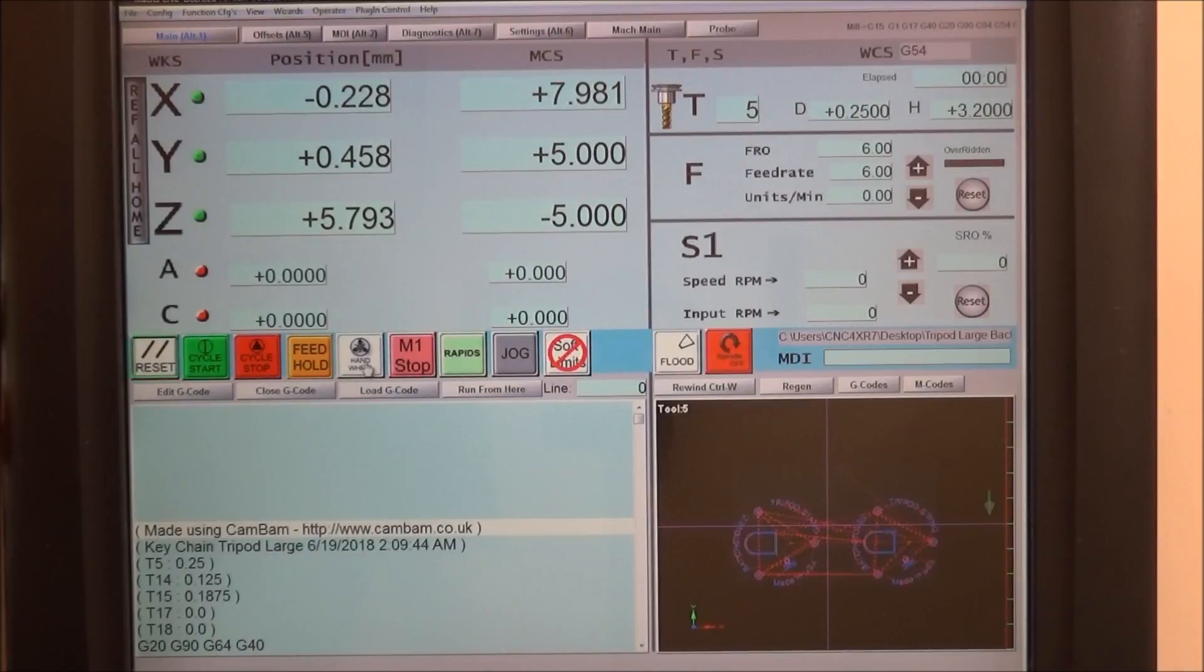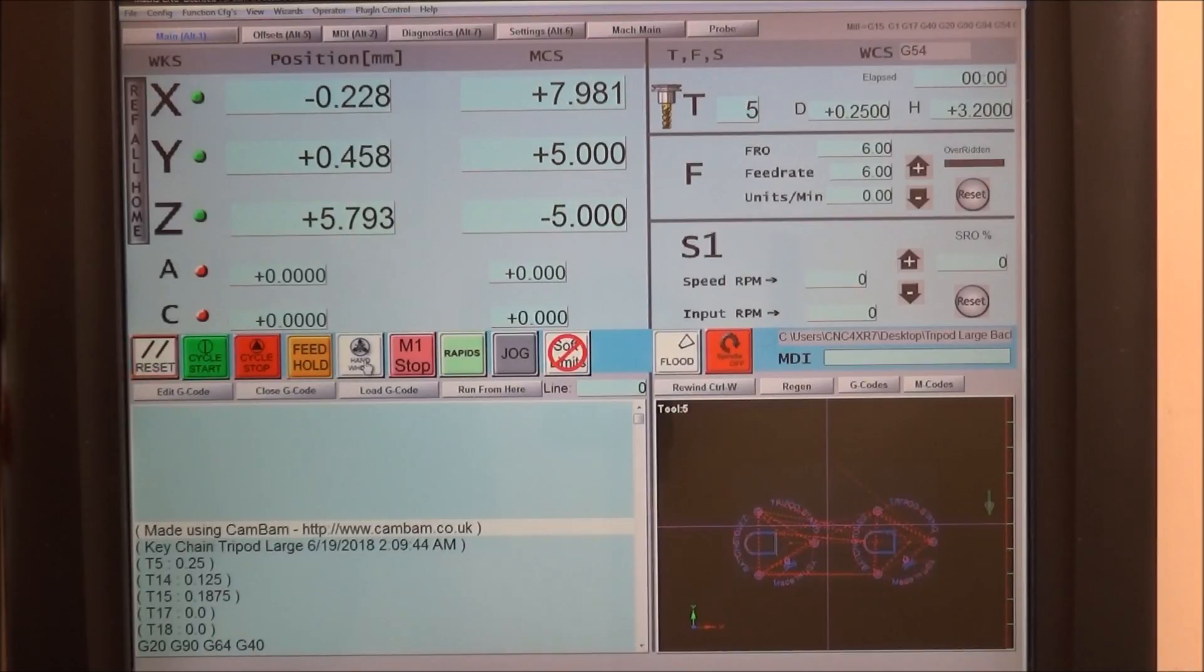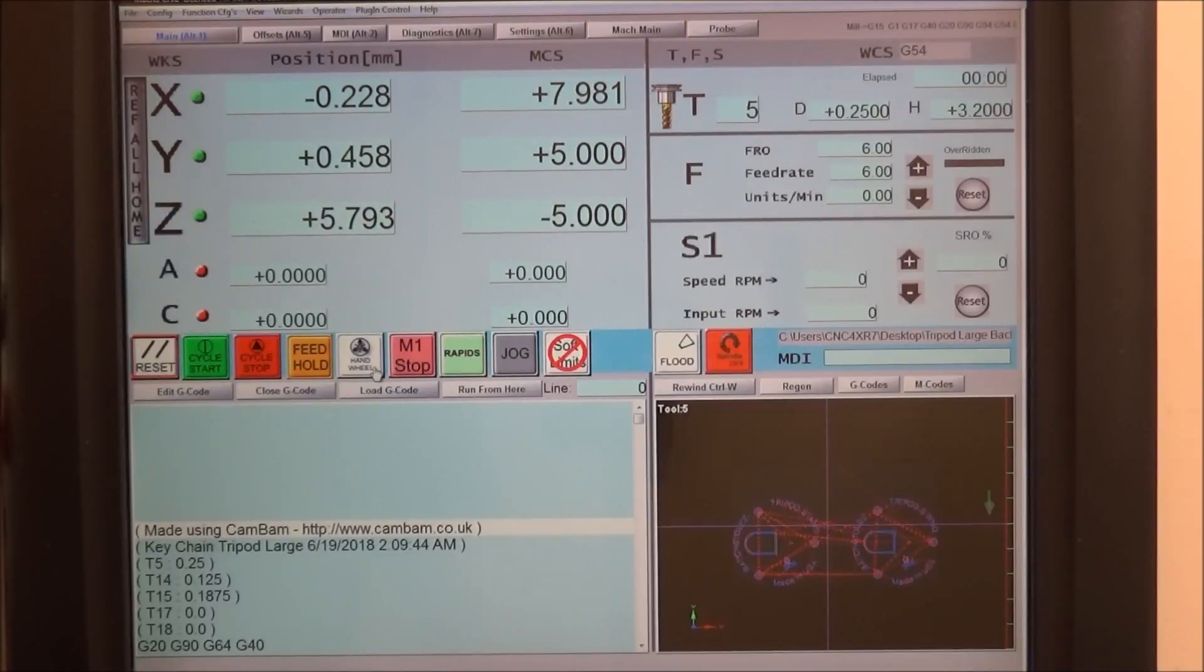We have this little hand wheel button. When you press it, it pops up the jog box. So if you're familiar with this and you use this frequently, that's real handy. Of course we've got our reset, cycle start, stop, feed hold.